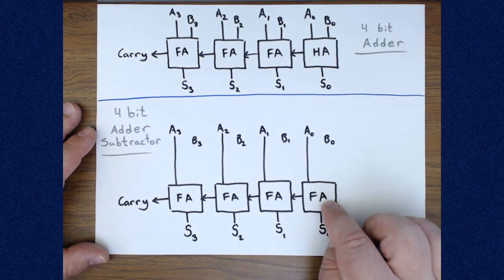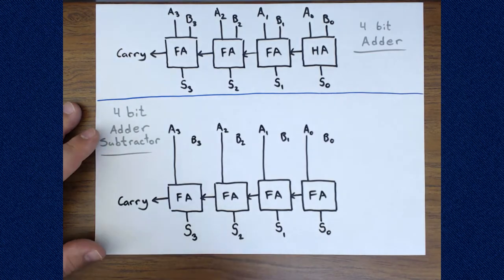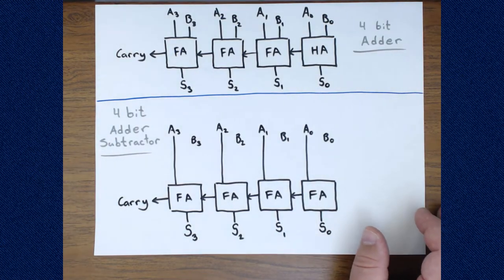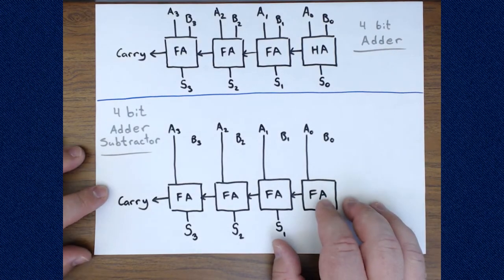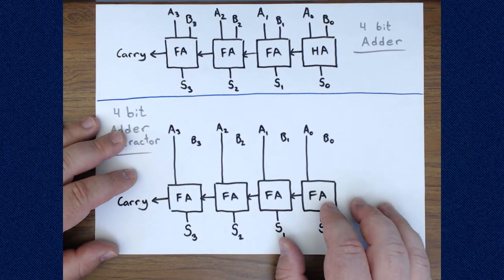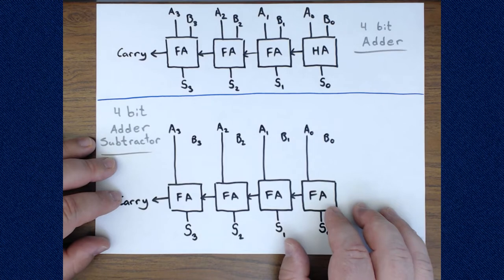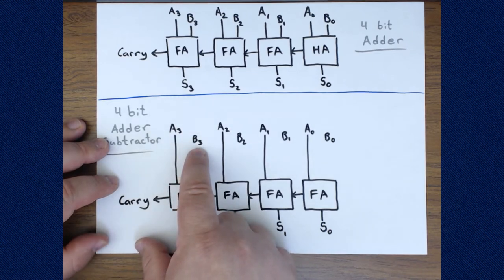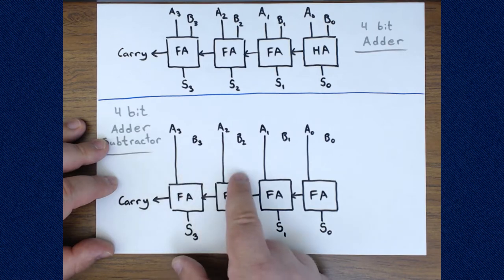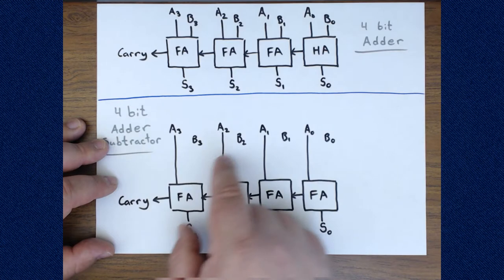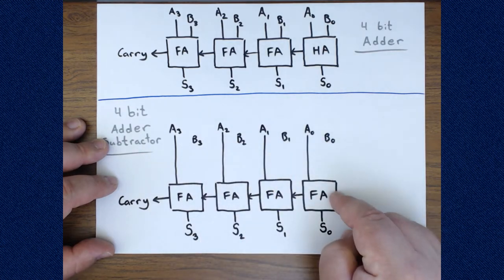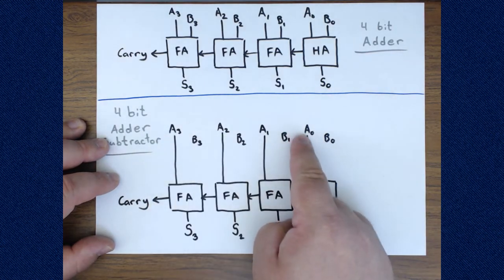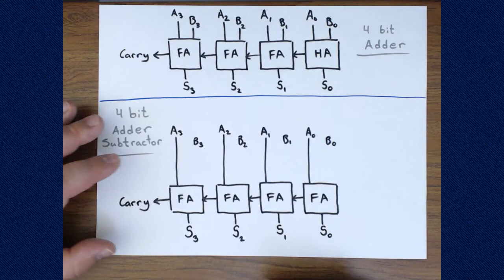But we could also put a 1 in on the carry in. That would mean taking our two numbers, adding them together, and then adding one more. One situation where we add 1 to a number regularly is during 2's complement negation — remember that subtraction is really the addition of a negative number. So if we wanted A minus B, we would invert B by putting inversion bubbles at the full adder inputs, run a 1 into the lowest full adder's carry in, and we have negative B. Adding A to that gives A minus B.